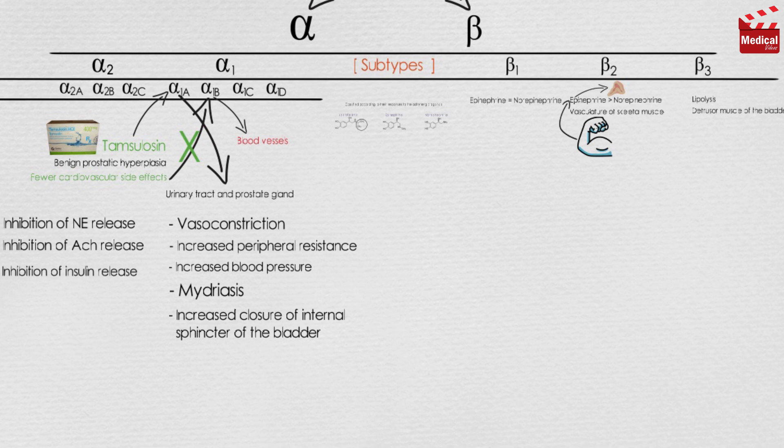The activation of beta 1 receptors produces tachycardia, increased myocardial contractility, and increased release of renin.